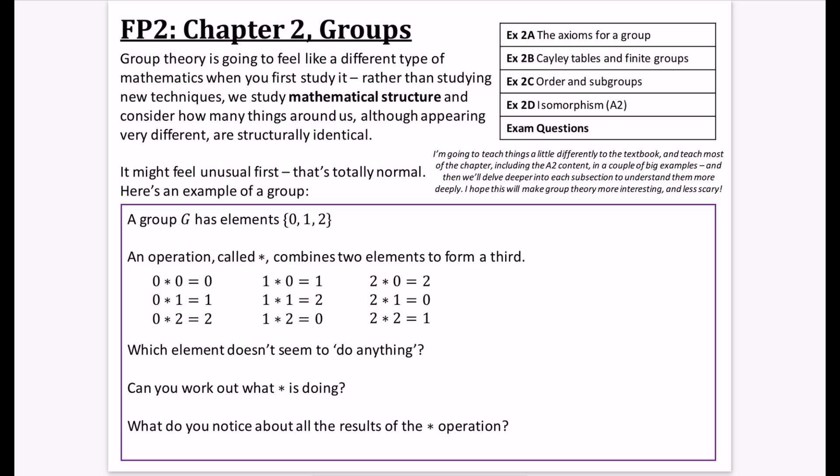Which element appears to not do anything for the kinds of results that we've got? Well, it looks like when you have 0 and you star it with 0, you get 0. When you have 1 and you star it with 0, you just get 1. When you have 2 and you star it with 0, you also just get 2. So, it looks like when you do stuff with 0, it doesn't really change anything.